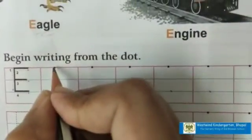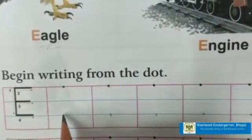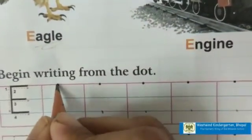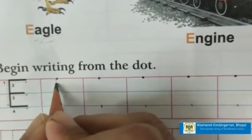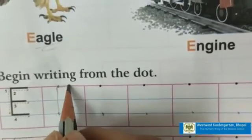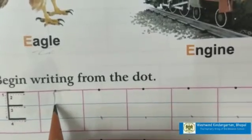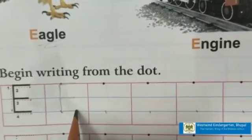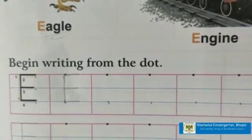Now, you have to make two dots like this. Put your pencil on the red line and make standing line like this. Make sleeping line on the red line. One more sleeping line in the middle. And one more sleeping line on the lower blue line. This is letter E.